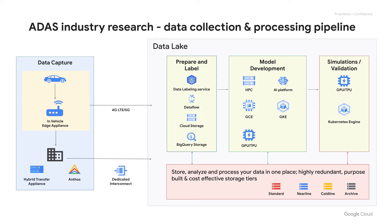If there is a 4G or 5G connection, data can be real-time transmitted to the cloud, so the research team can see in real-time all the fleet data and events being generated. Once that processing is done and the vehicle comes back, there's an opportunity to offload data from the vehicle into hybrid transfer appliances or local storage, where more processing can happen at the depot. With larger connections like dedicated interconnect, the data can be moved back to data centers and the cloud, where you have access to the entire platform — ML model development, simulations, data preparation and labeling, and analytic services, all powered by the right storage offerings.